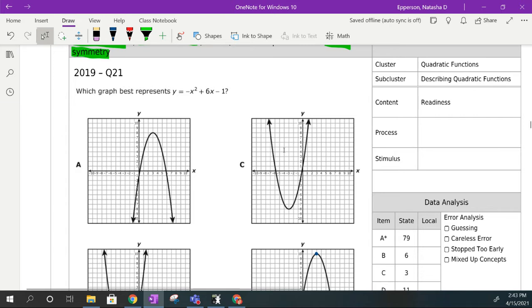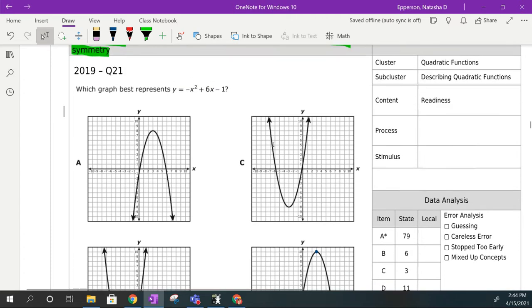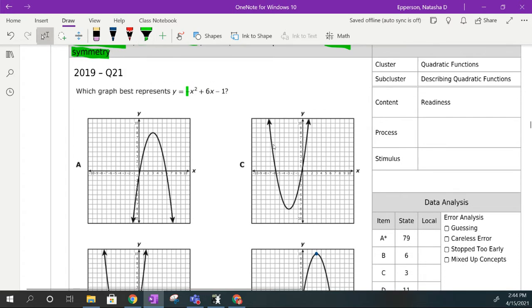The first question asks us, what graph best represents this quadratic equation given to us? I'm going to do something really easy right off the bat. First thing I'm going to do is look at the negative x squared there. That tells me that we have a sad parabola, so that means our parabola should be going down. So that's going to eliminate C, and that's going to eliminate B as an answer choice.